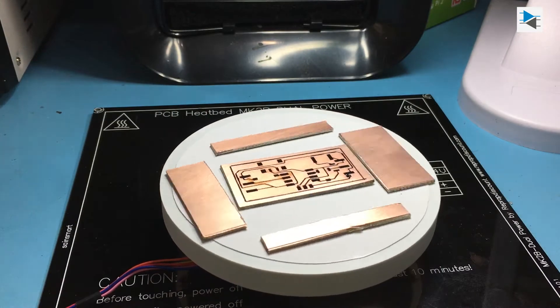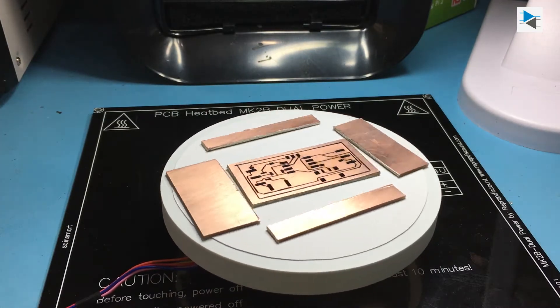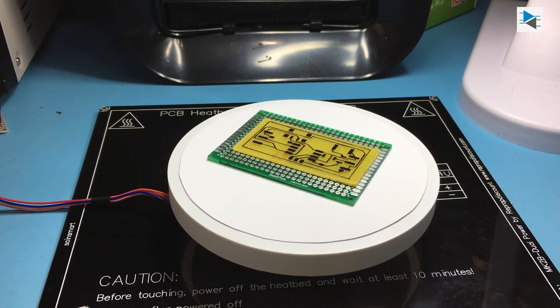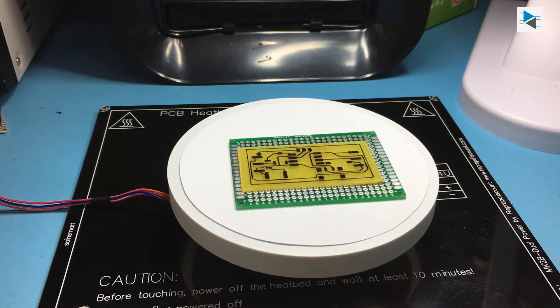The board was etched using ferric chloride, but we recommend either getting the board fabricated or using another etchant as ferric chloride can get pretty messy and the stains are nigh impossible to remove.